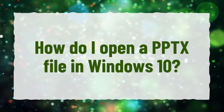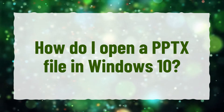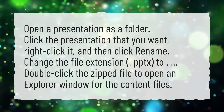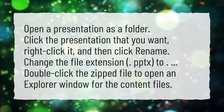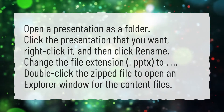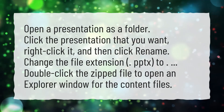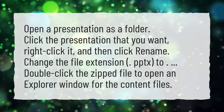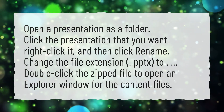How do I open a PPTX file in Windows 10? Open a presentation as a folder: click the presentation that you want, right-click it, and then click Rename. Change the file extension from PPTX, then double-click the zipped file to open an Explorer window for the content files.